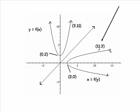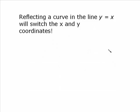And that is always the case when you do reflections in the y equal x line. So reflecting the curve in this line will switch the x and the y coordinates. So every point along the way will undergo that.